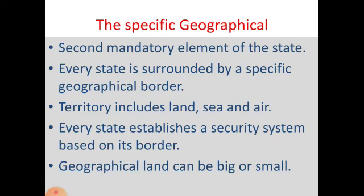The second mandatory element of the state is a specific geographical territory or area. Every state is surrounded by a specific geographical border. If there is a state, you will find a border. Geographical territory means land, sea, and air — not only land area. Our water area and air space are also included in our geographical territory. Every state establishes a security system based on its border; in Bangladesh we have the BGB maintaining border security.